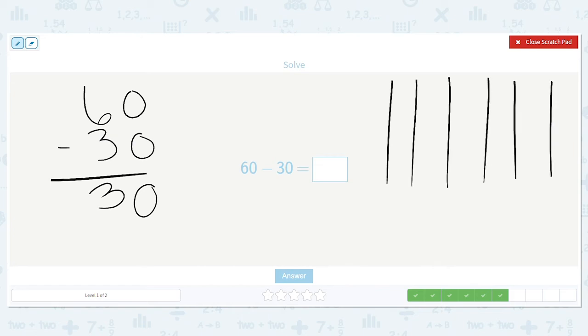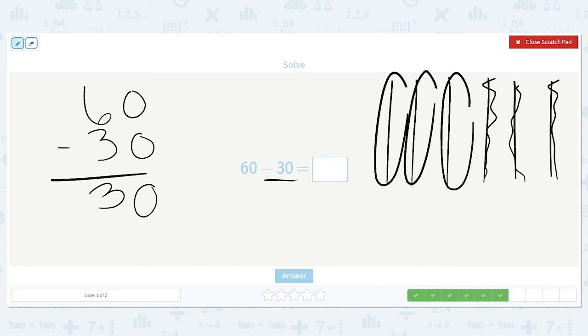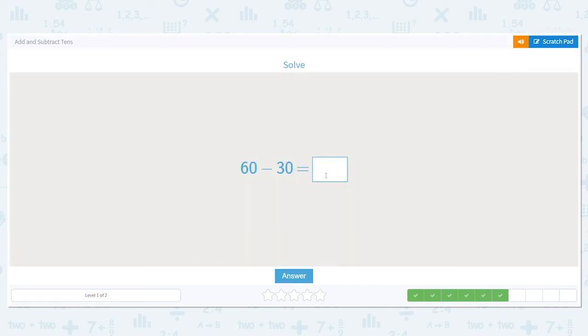So 10, 20, 30, 40, 50, 60. I need to get rid of 30. So 3 sticks. 1, 2, 3. So what do I have left? 10, 20, 30. I have 30 left. Still get the same answer. Both are correct ways of solving the problem.